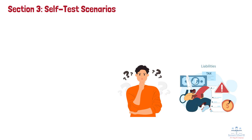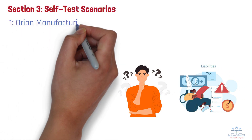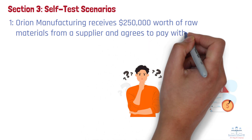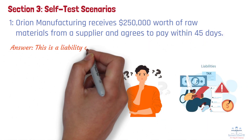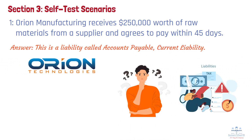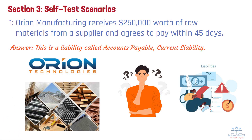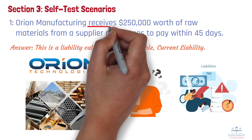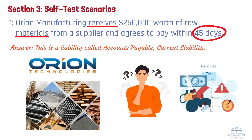Scenario 1: Orion Manufacturing receives $250,000 worth of raw materials from a supplier and agrees to pay within 45 days. Answer: This is a liability called accounts payable, a current liability. Orion Manufacturing has received materials necessary for production, creating a present obligation to pay the supplier. The transaction meets all liability criteria — a past event of receiving materials, a present obligation to pay within 45 days, and a measurable amount of $250,000 from the invoice. Since payment is due within a year, this is classified as a current liability.